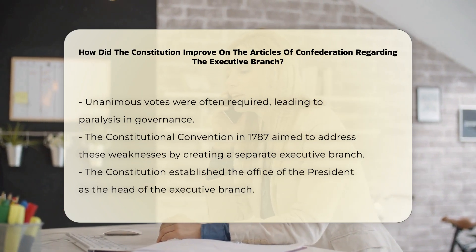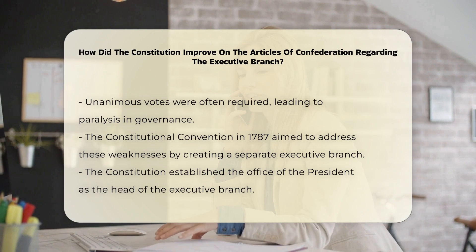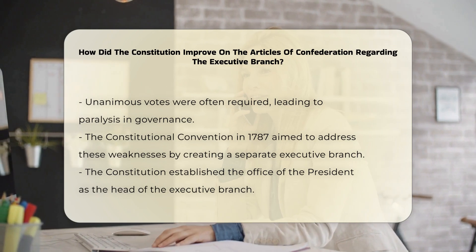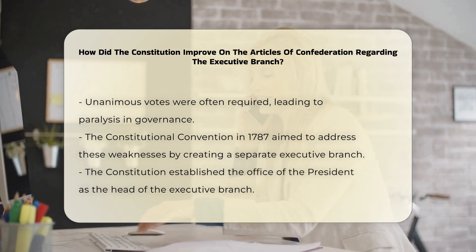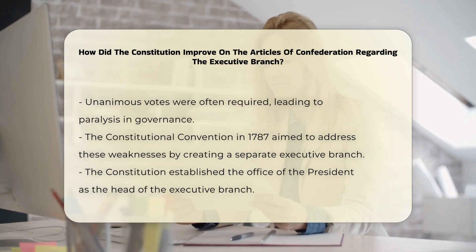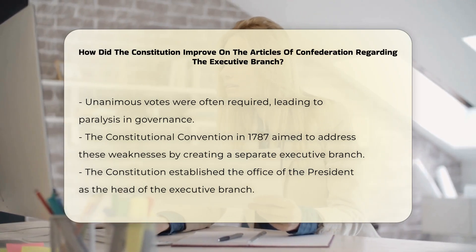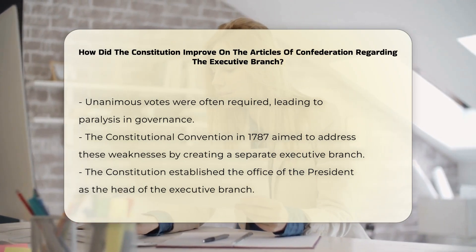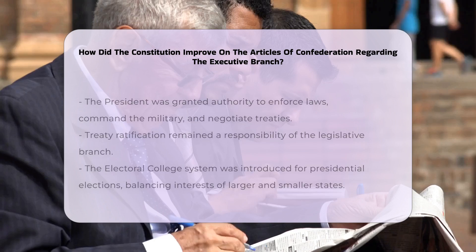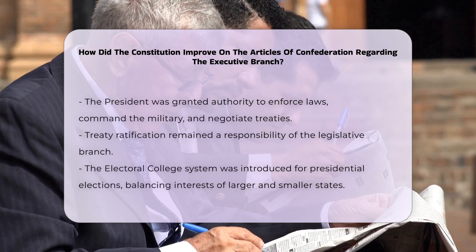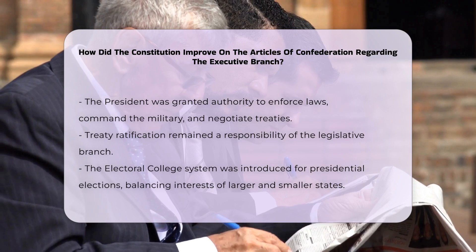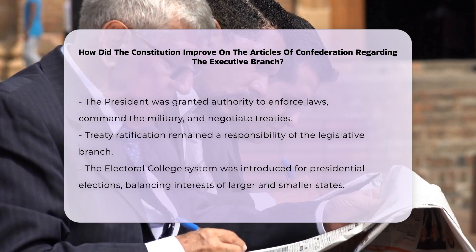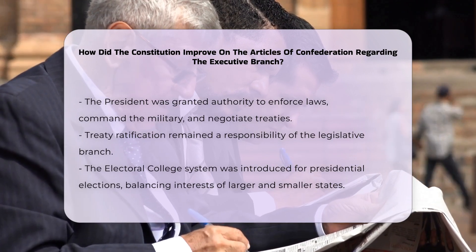The Constitution established the office of the President, who would serve as the head of the Executive Branch. This was a significant departure from the Articles, where such a position did not exist. The President was given the authority to enforce laws, command the military, and negotiate treaties, although treaty ratification remained a legislative responsibility.